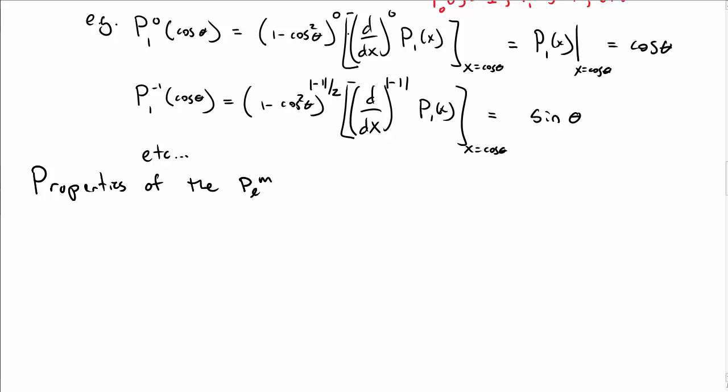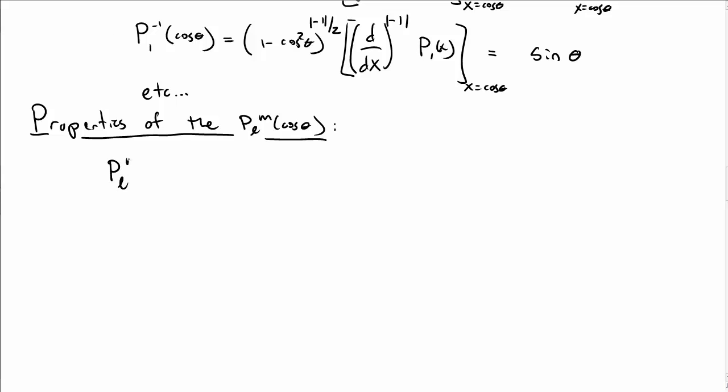So you can imagine plugging cosine theta in for any set of m and l values to generate these. Let's talk about some of the properties of P_L^M of cosine theta, because it turns out some of the properties mirror the properties of angular momentum. So let's just rewrite P_L^M of x, the definition that we had from above.